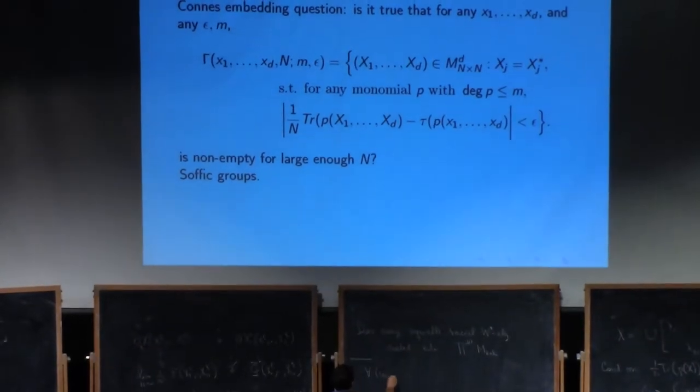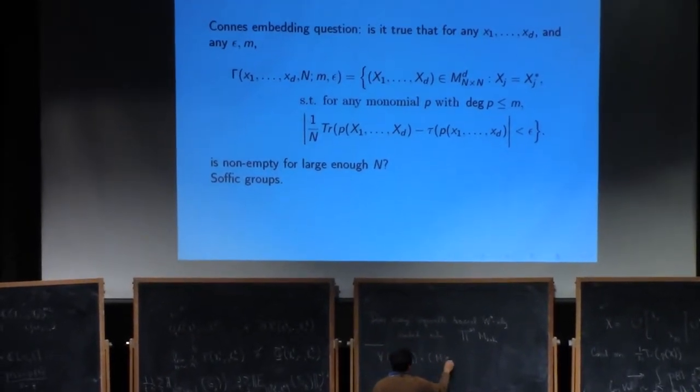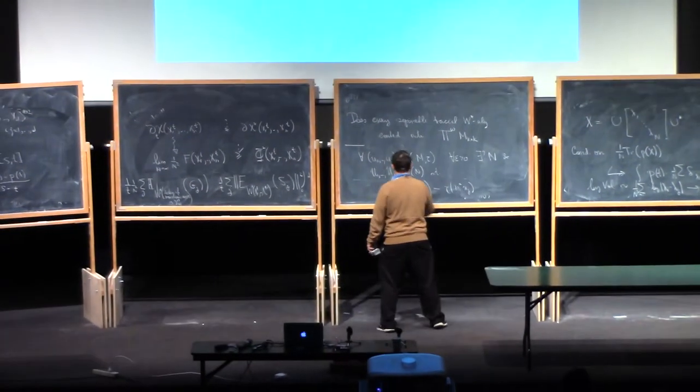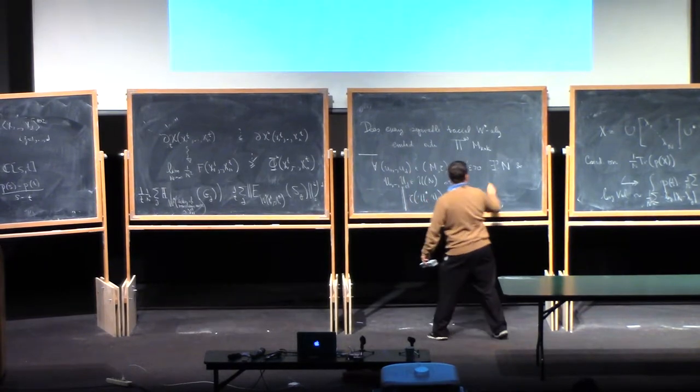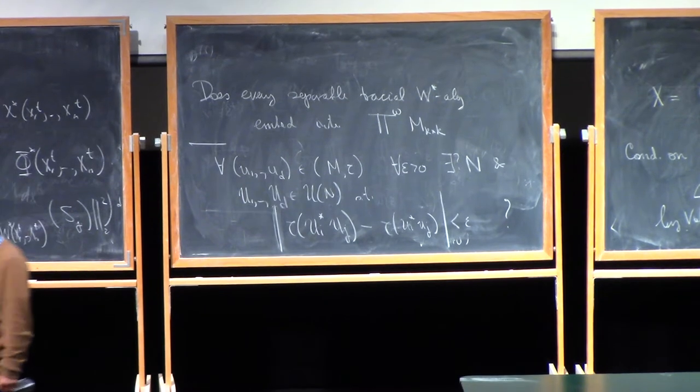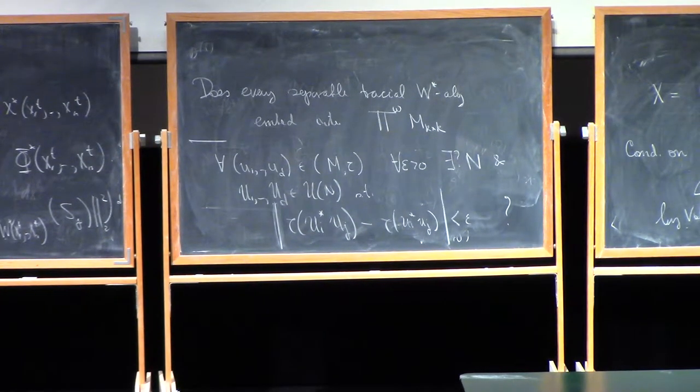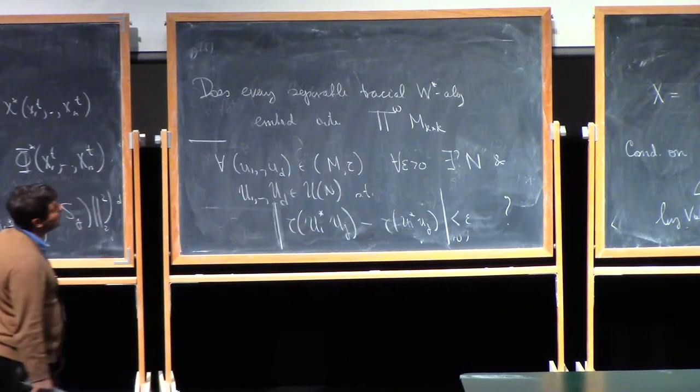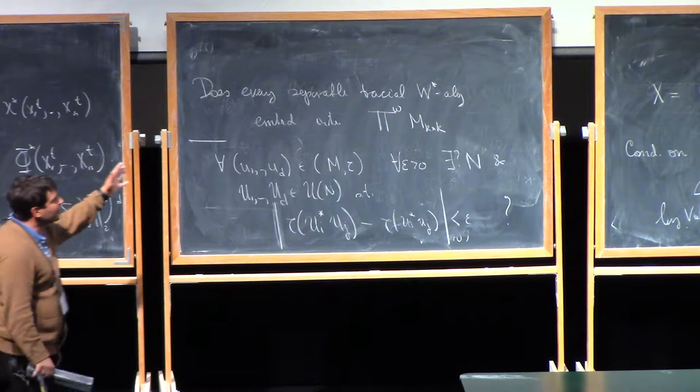For any u1, ud in some von Neumann algebra M tau and for any epsilon is there an n and capital U1 capital Ud which are n by n unitaries with a property that tau of Ui star Uj is within epsilon of tau of little ui star uj. So you just need moments of order 2. And unbelievably we don't know. Okay, so this question has lots of interest and there's now a connection with quantum information theory there's something called some problem that is associated with that. It's also been studied a lot in C star algebras and von Neumann algebras for various reasons.